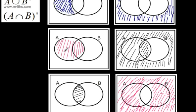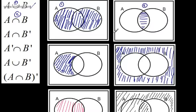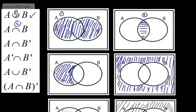This right here is A and B complement — A and not B. So there we go. The union is both circles combined. The intersection is the part where they cross.